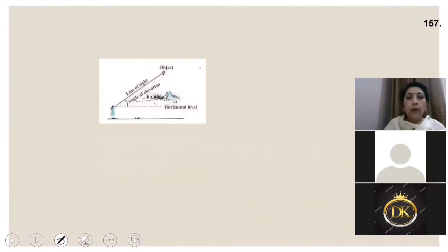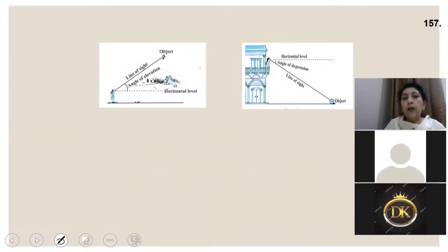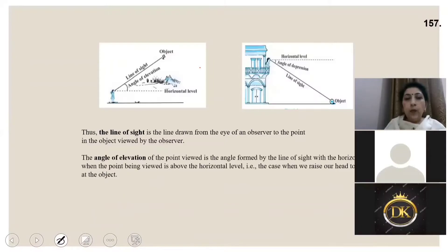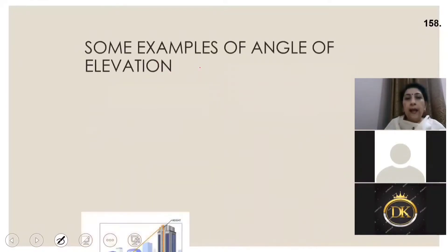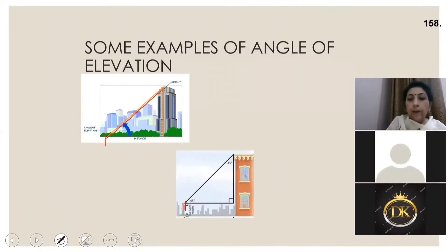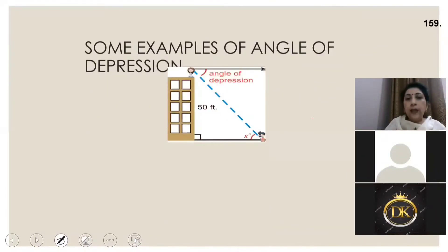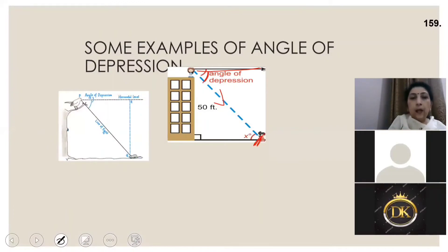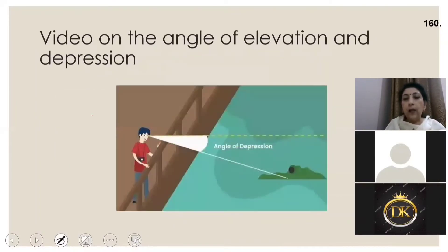Remember: angle of elevation is always when you're looking up, and angle of depression is always when you're looking down. Both are always measured with the horizontal line. I have used a GeoGebra applet to explain the line of sight, angle of elevation, and angle of depression. Whenever you're looking up at the top of a building, you get the angle of elevation; whenever looking from a height downward, that angle with the horizontal is the angle of depression.